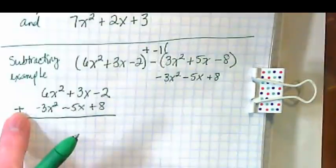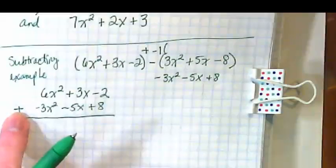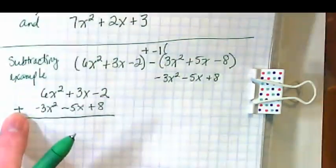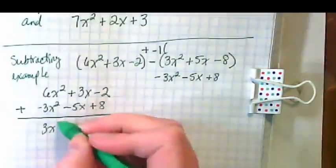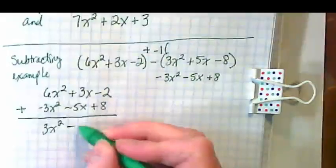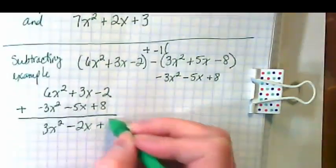Notice when I wrote it over here, I still drew my line. And what did I put over here? Plus. Because we're still combining our like terms, we're still putting them together. We end up with 3x² - 2x + 6.